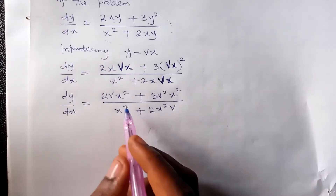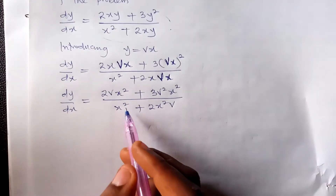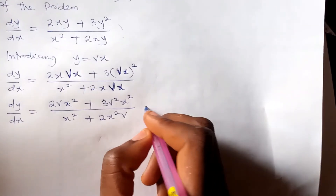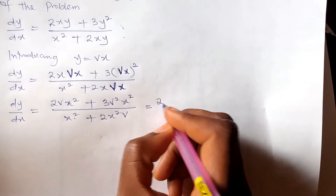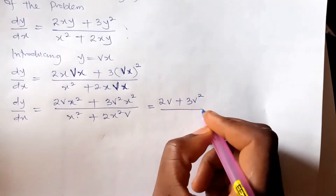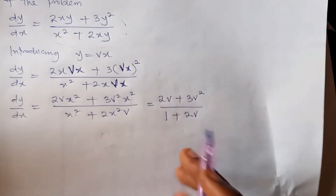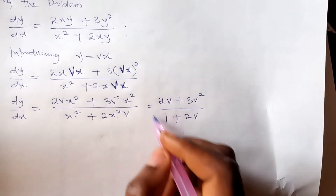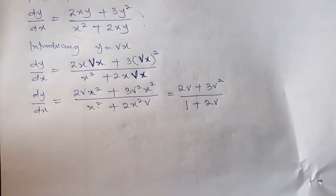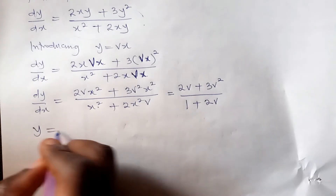After expanding, I can factorize x² out of the expression. Factorizing x² and canceling, the expression becomes (2v + 3v²) divided by (1 + 2v). There is no independent variable x remaining, confirming we can use the homogeneous method.